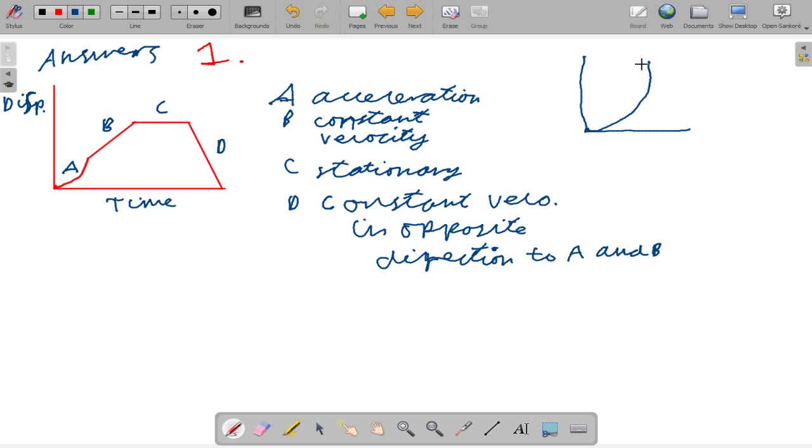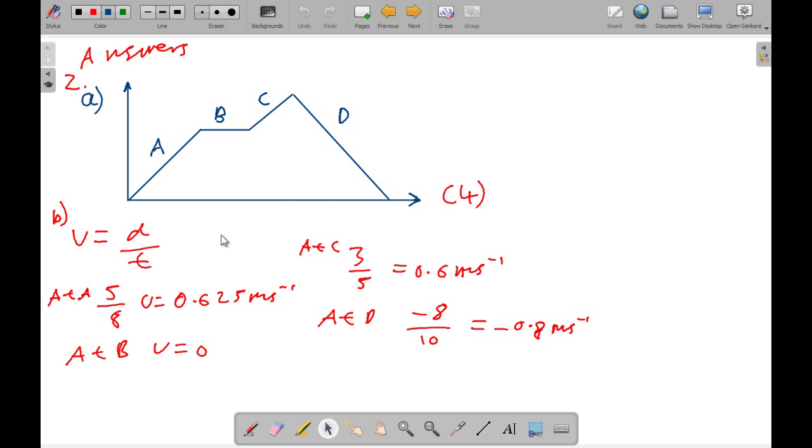So it doesn't necessarily mean he's slowing down. He's decelerating, but he's changing - he has a constant velocity in another direction. So looking at question 2 now, we're drawing our displacement-time graph. We have A at constant acceleration, B stationary, C acceleration again, D constant velocity in a different direction.